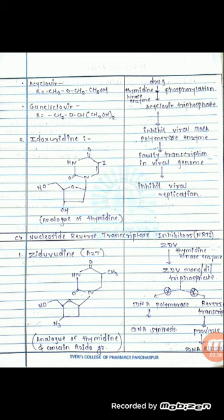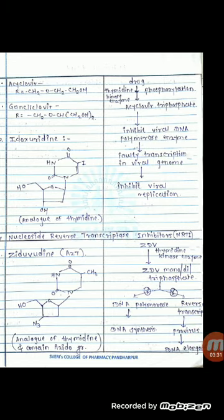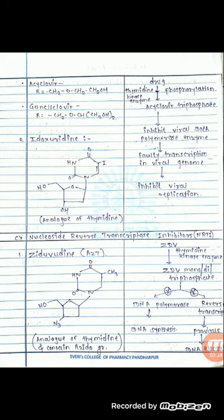The mechanism of zidovudine: zidovudine is converted into zidovudine monophosphate, diphosphate, and triphosphate in the presence of thymidine kinase enzyme. These zidovudine triphosphates act by two ways. First, they inhibit the DNA polymerase enzyme, thereby inhibiting DNA synthesis. Second, they inhibit the reverse transcriptase enzyme, inhibiting the production of provirus and interfering with DNA elongation.